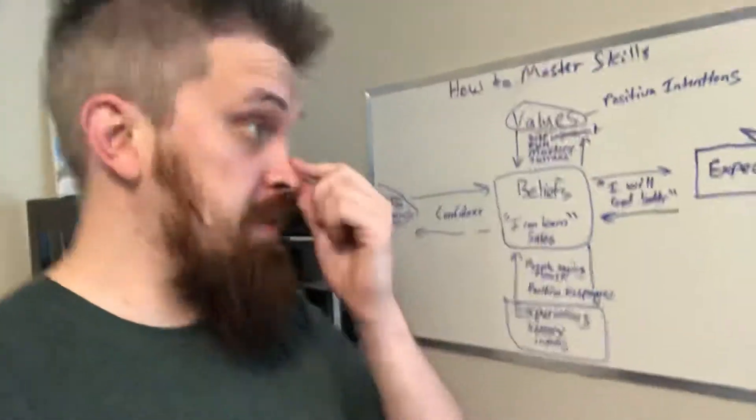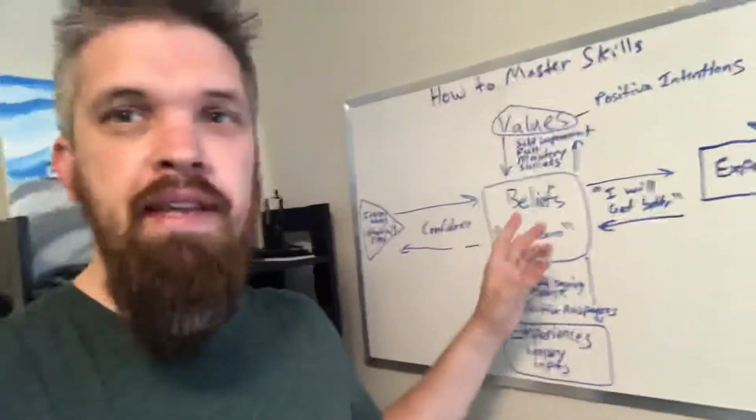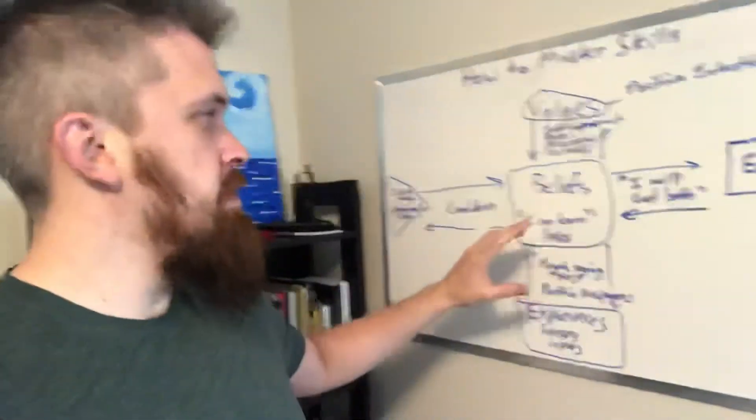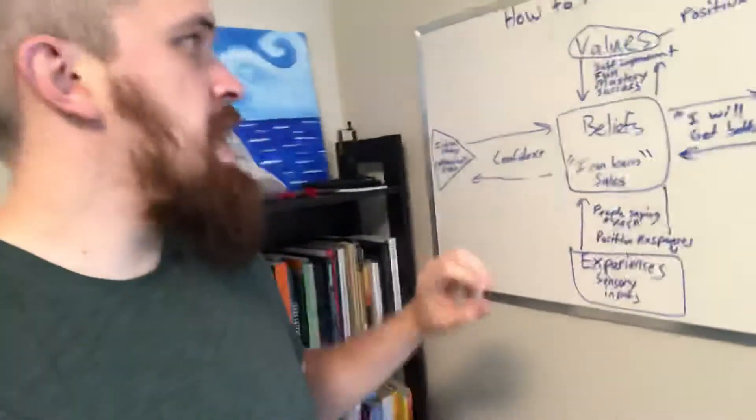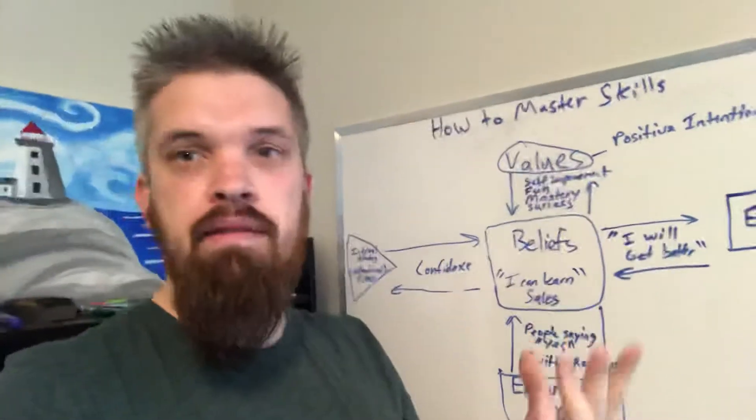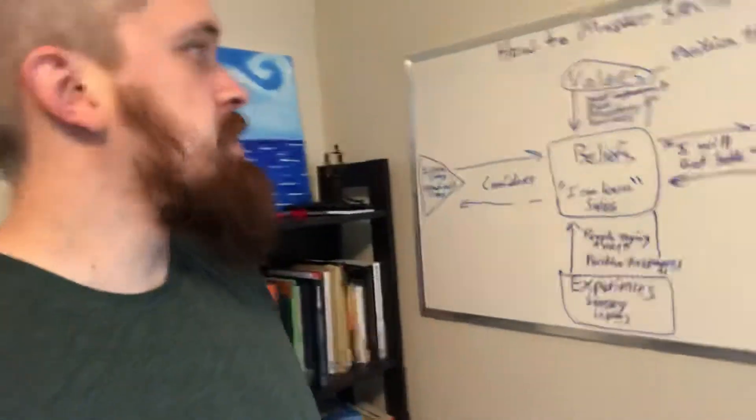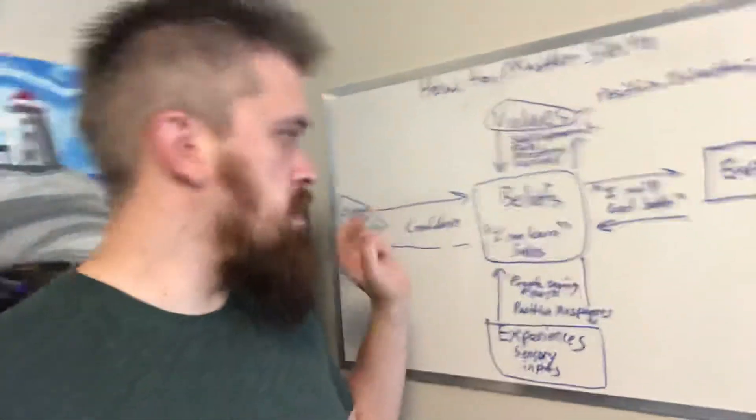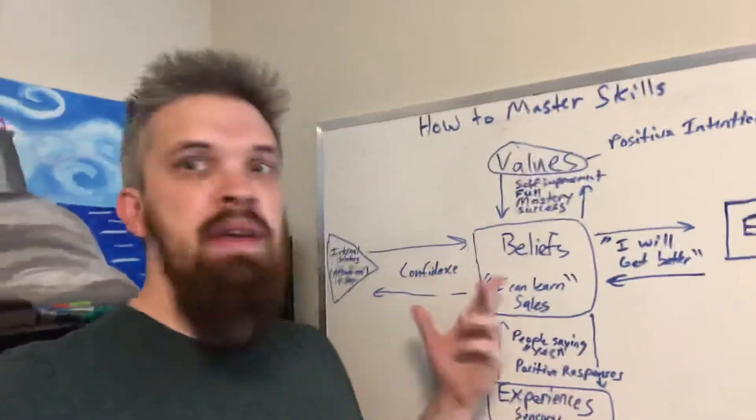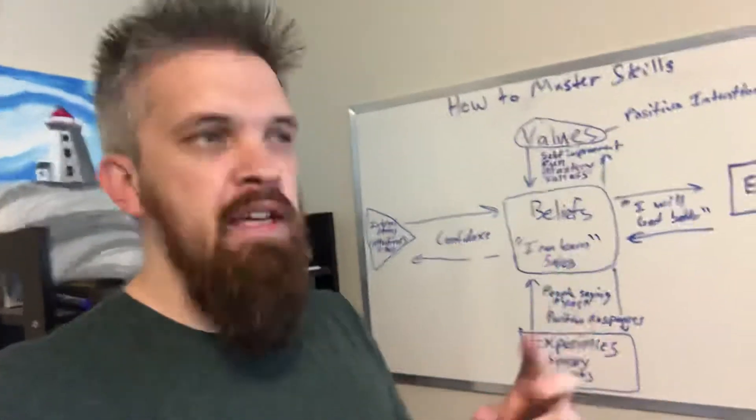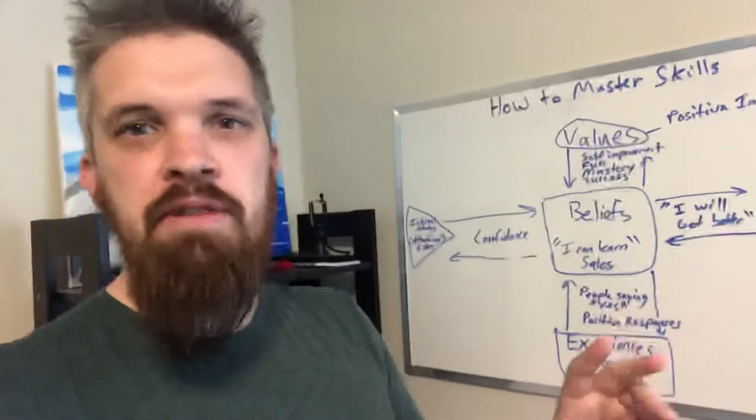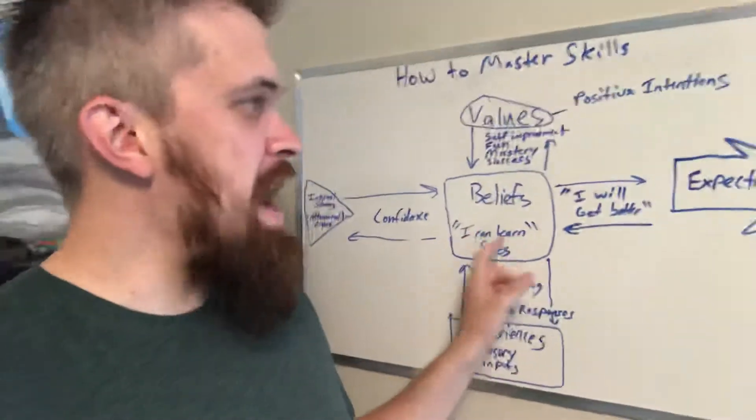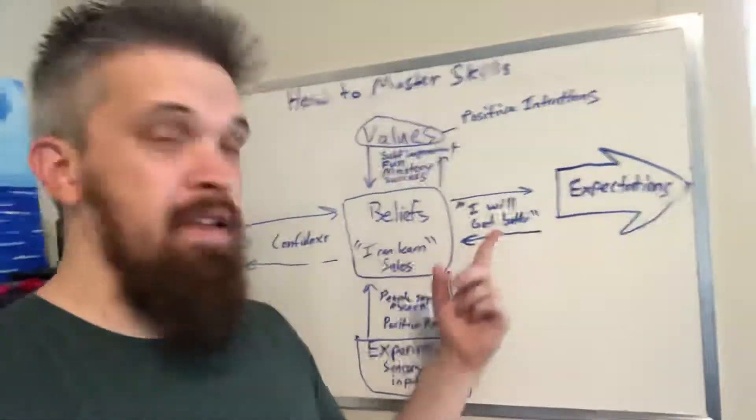Now, here's where most people screw up when they're trying to learn a new skill. So any one of these can be off. This is called a meta structure of a belief. Any one of these can be off and you will never get good fast. So your belief might be, I'm an introvert. I can't sell. Or I'm not a people person or I'm not a natural born salesperson or Gary Vee said, I don't have entrepreneur DNA. So that's my belief. And if your belief is that, well, your expectations are basically going to be negative.